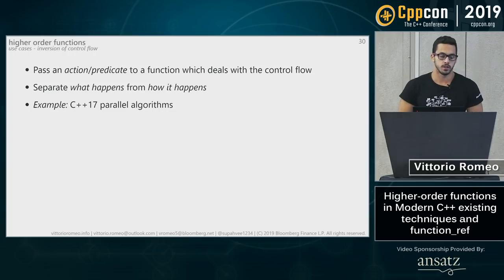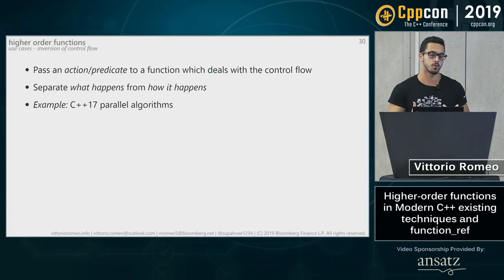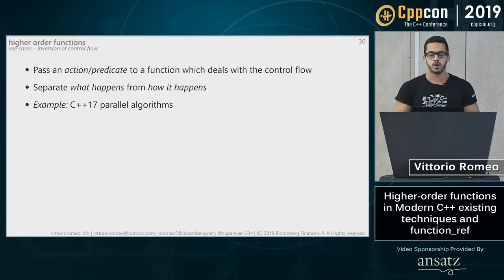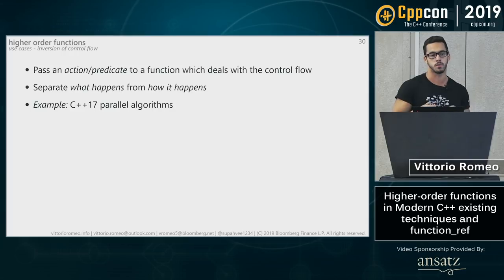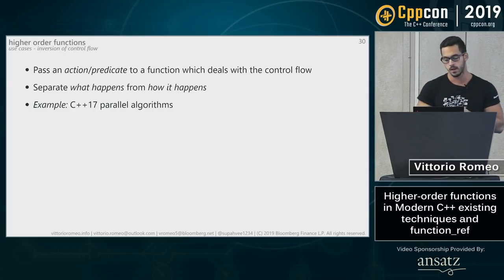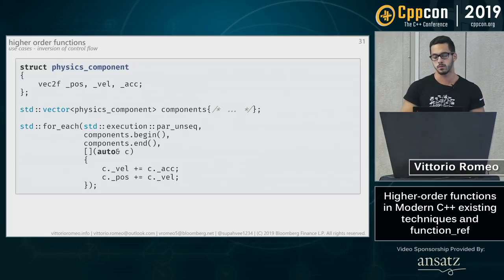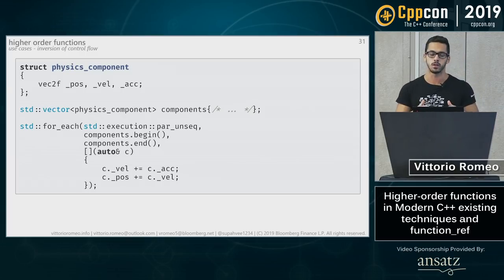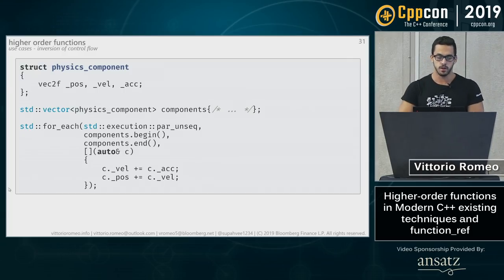This brings us to inversion of control flow — arguably the most important use case. It's about separating what happens from how it happens: rather than having control flow explicit in your business logic, you invoke a function that provides the control flow, and you just supply the action. The main example is C++17 parallel algorithms, which take a predicate and under the hood do all the scheduling and dispatch to extract maximum performance.